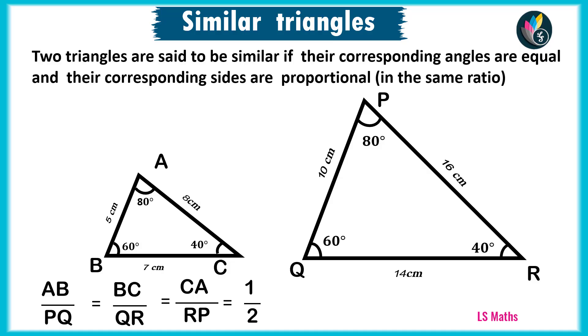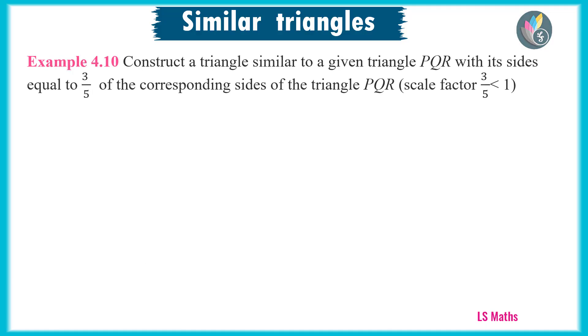So, here all the three angles are equal and the sides are proportional. So we can say triangle ABC is similar to triangle PQR.